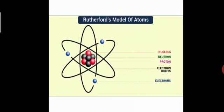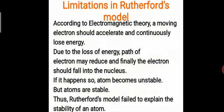But in reality, the atom is stable — electrons do not fall into the nucleus. Rutherford was not able to explain the stability of an atom. He could not explain why electrons continuously revolving around the nucleus don't lose energy and collapse. So that was the limitation of the Rutherford model.